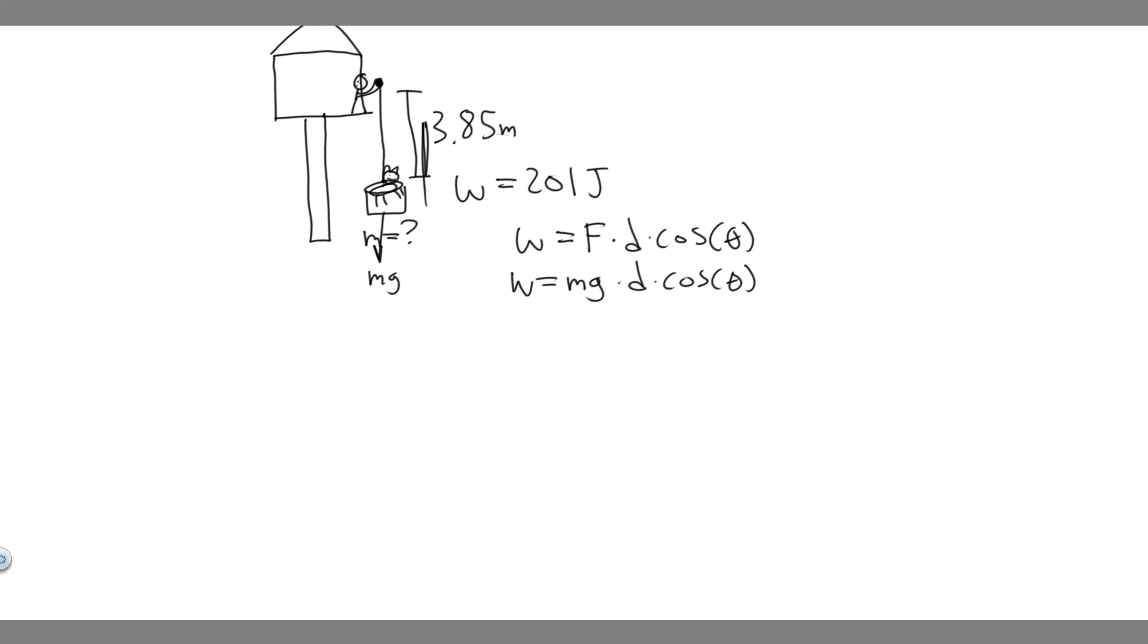And then the cosine of theta—in this case, what theta is, it's basically the angle between where it's going and where the force is being applied. So in this case, they're going to be pulling a force like this, some tension force. But we know it's going to be equal to mg. So the force is going to be going up like this.